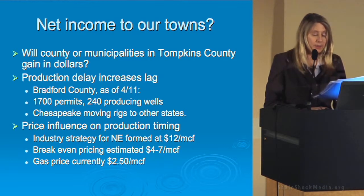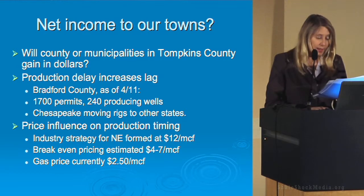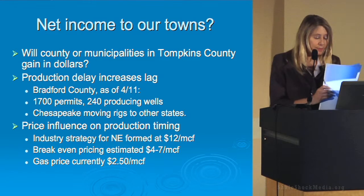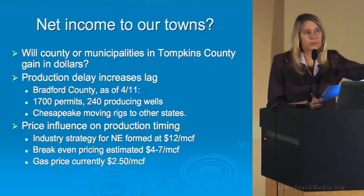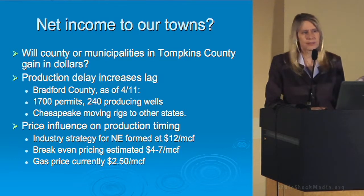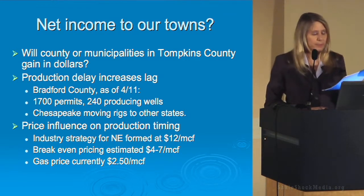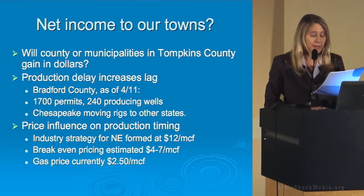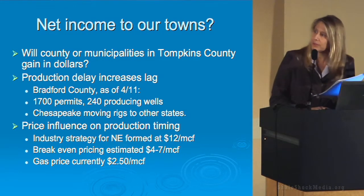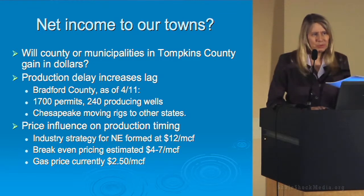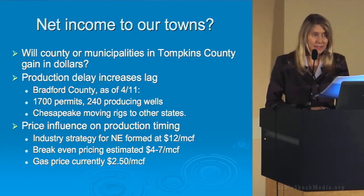We have heard that Chesapeake, which is the big driller in this area, is moving rigs to other states. The industry strategy for the Northeast was developed at a time when the price of gas on national and international markets was up at $12 a unit. Break-even pricing is estimated at $4 to $7 per unit. The gas price was at $2.50 when this slide was written and then down to $2.32 — that is a very big difference from break-even.